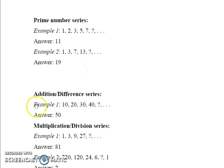Next, consider addition and difference series. In example 1, we have 10, 20, 30, 40 and so on. It is easily seen that each successive term is obtained by adding 10 to the preceding term. Therefore, after 40, we will have 40 plus 10 which is equal to 50 as our answer.